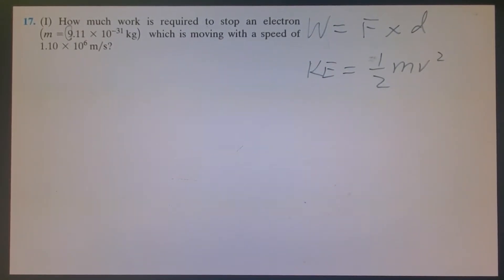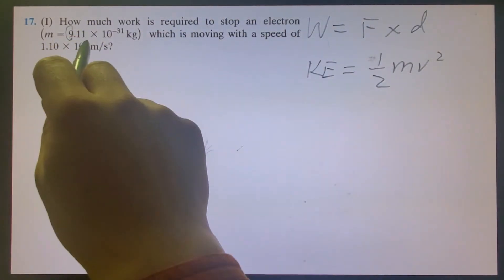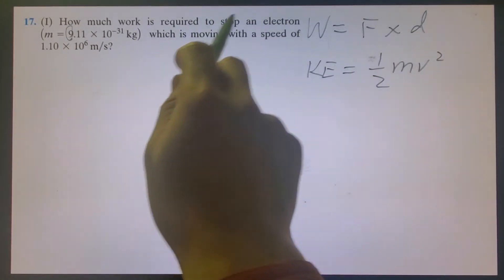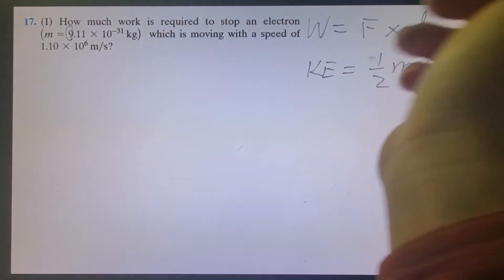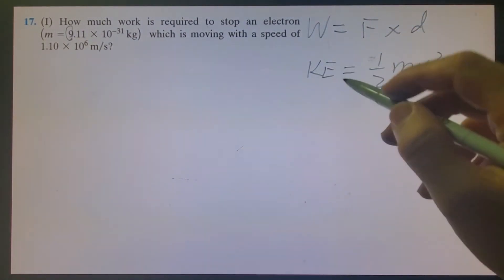How much work is required to stop an electron which is moving with a speed of 1.1 times 10 to the 6 meters per second? By the way, what type of energy would this electron have? An electron is moving. When something is moving, that means it has kinetic energy.